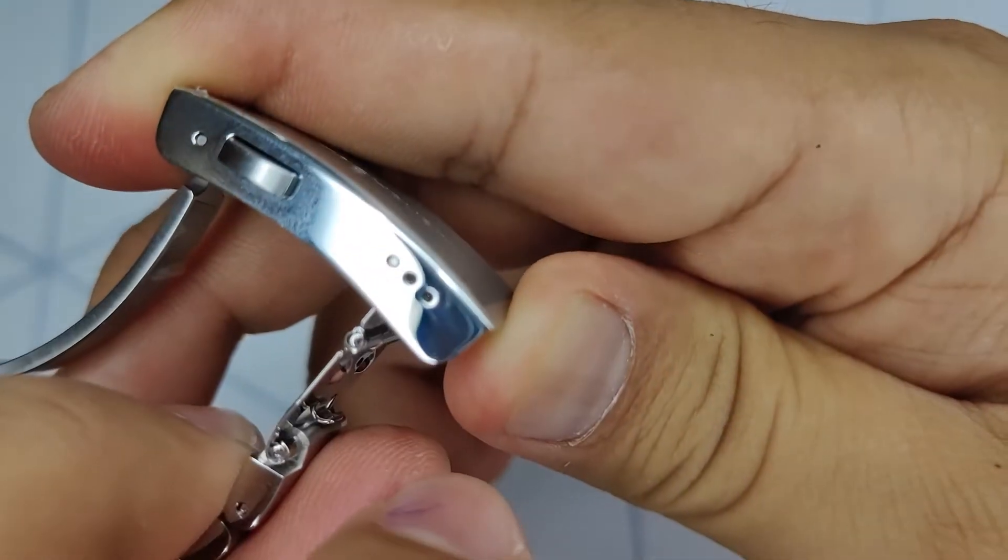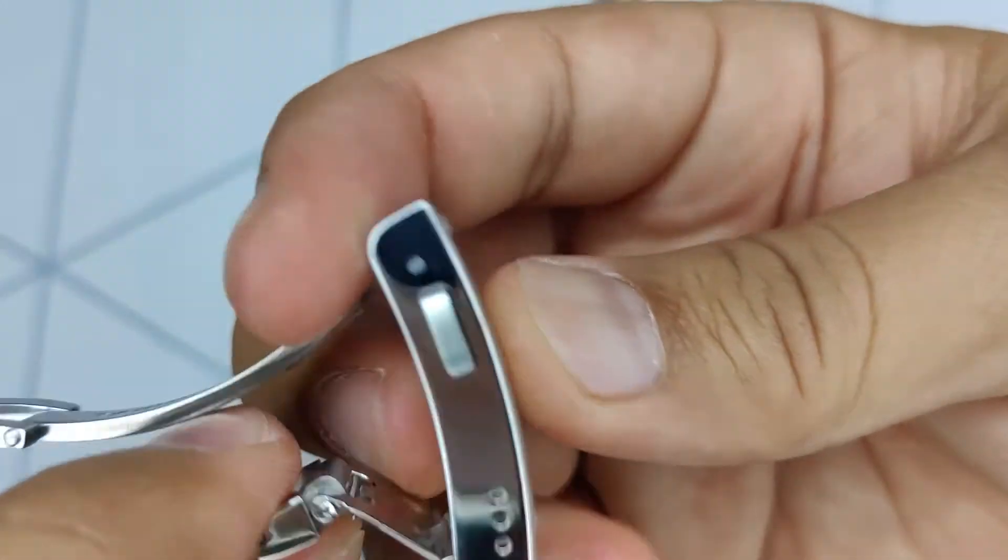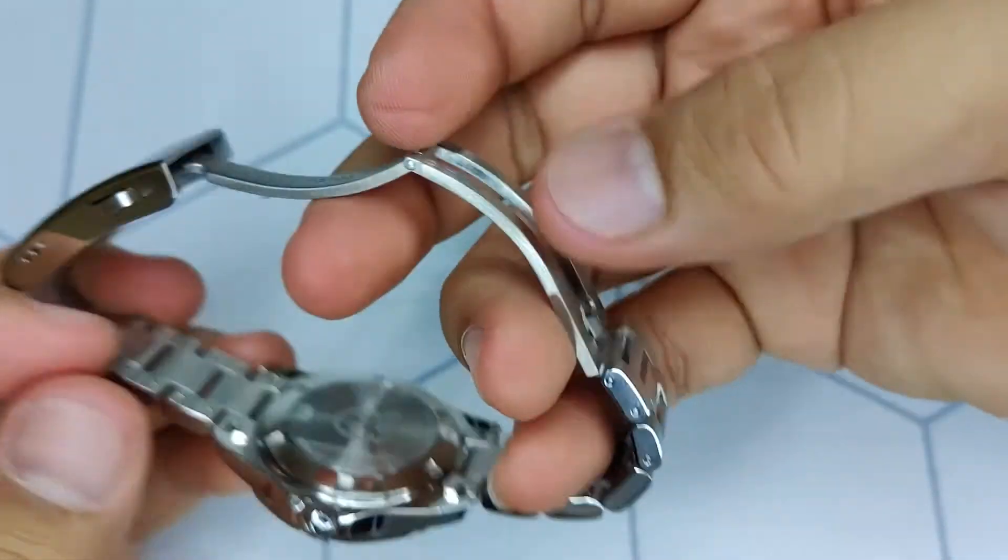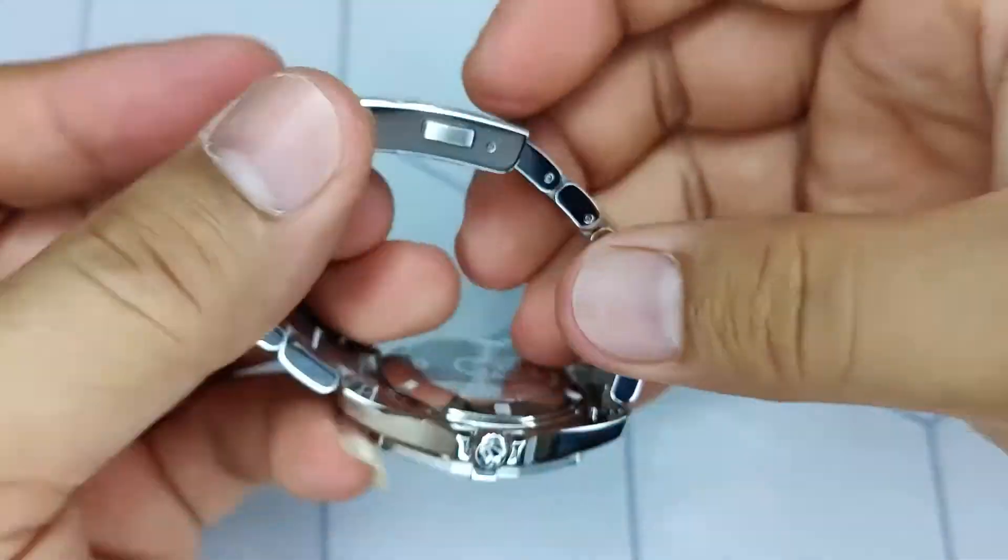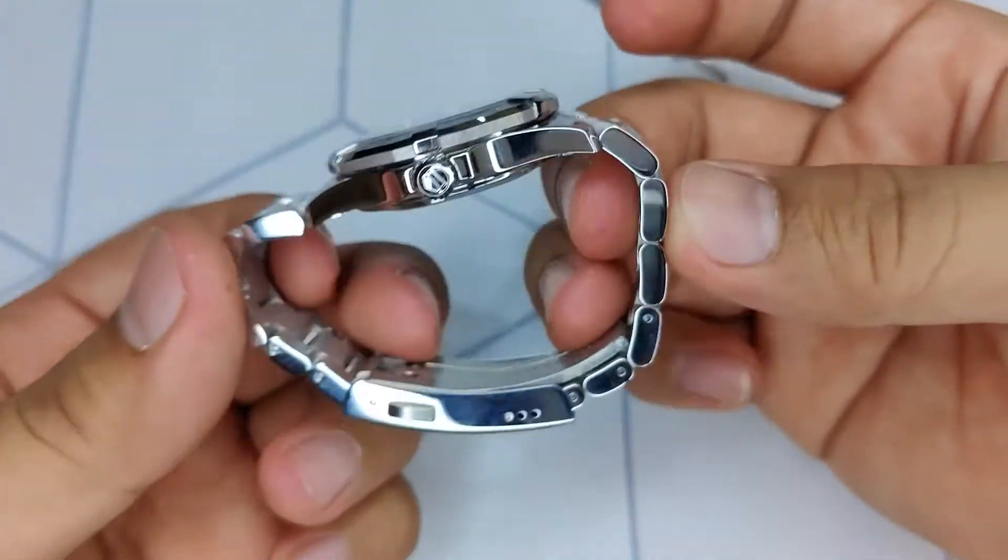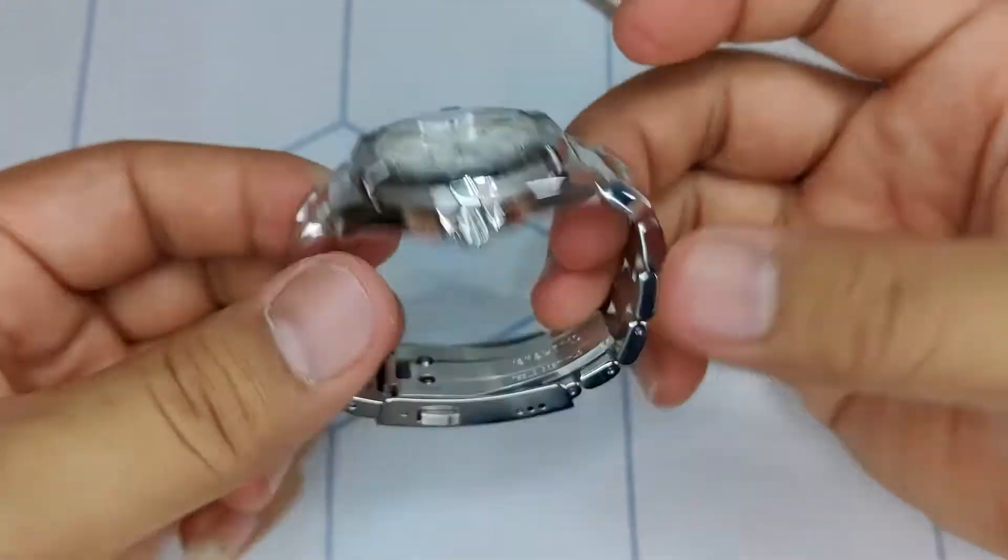This is how it looks when the pin is not in the same hole and the lock cannot be engaged. And there you go. And that's how you do the clasp micro-adjustments.